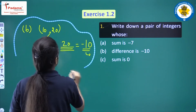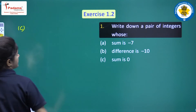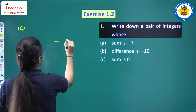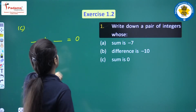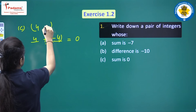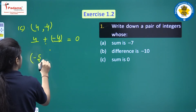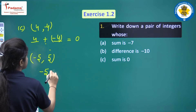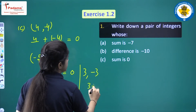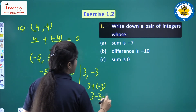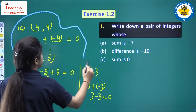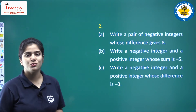Now part c: write a pair of integers whose sum is zero. You can write four and minus four. You can also write minus five and five, since minus five plus five equals zero. Or three and minus three, since three plus minus three equals zero.